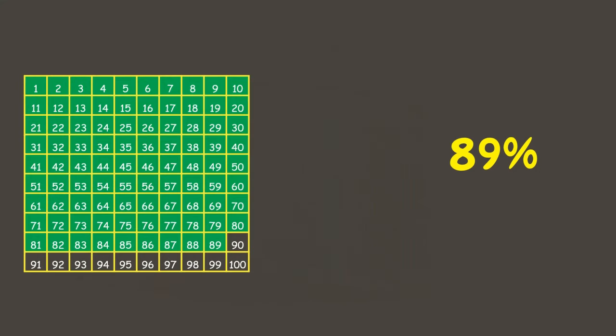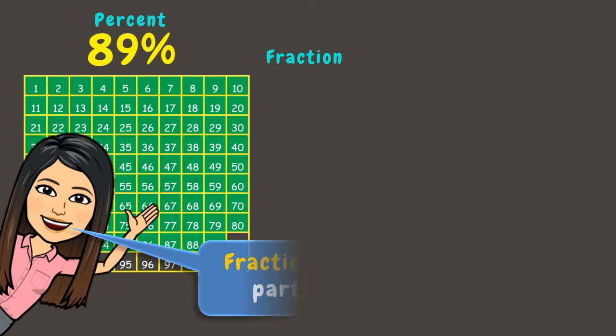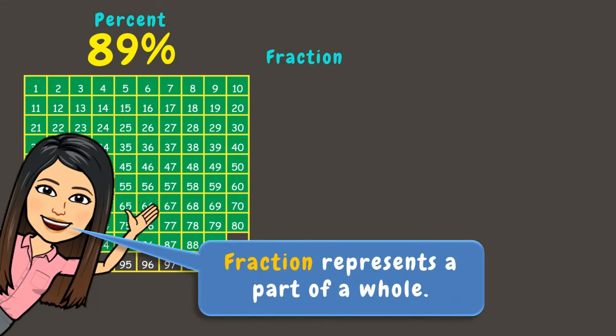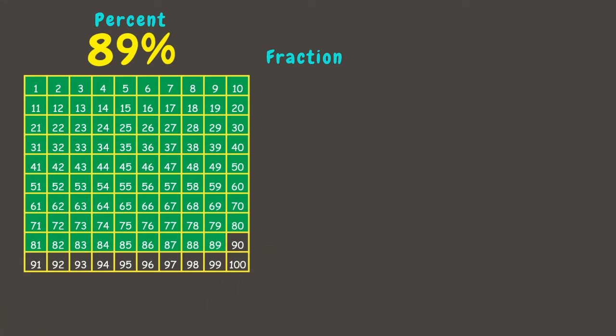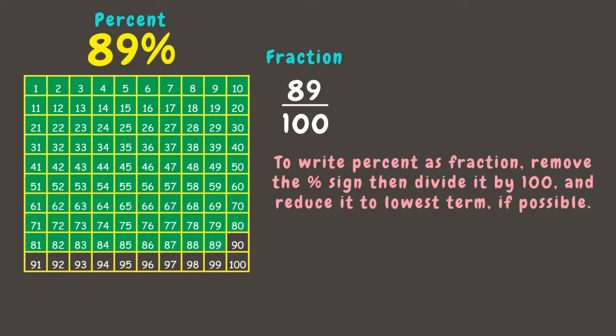Did you know that percent can also be written as a fraction? Since a fraction represents a part of a whole, let's write the fraction of the figure shown. Since 89 parts are shaded, that will be our numerator, while the total number of parts — 100 — will be the denominator. Therefore we have 89 out of 100, or 89/100, as our fraction. We can write percent as a fraction by simply removing the percent sign and dividing by 100.